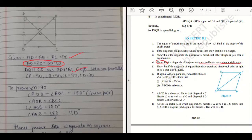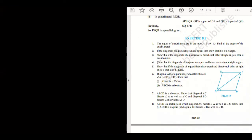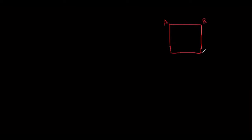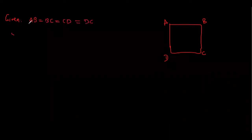Remember one thing: if we are asking you to show something, then other than those properties, all the rest of the properties are given. For example, in a square all sides are equal, so we are not asked to prove that — so in the given, we can write AB equals to BC equals to CD equals to DA.